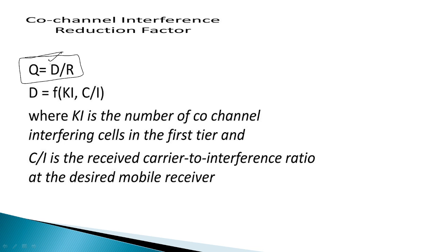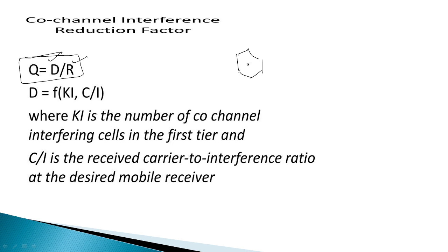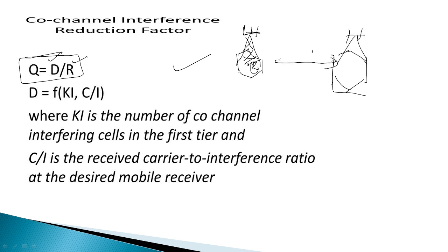Here, D is the distance between the two cell sites and R is the radius of the cell site. This hexagonal shape represents the cell site, and R is its radius. The quality factor always depends on D/R — the distance between the two co-channel cell sites divided by the radius of the cell site.